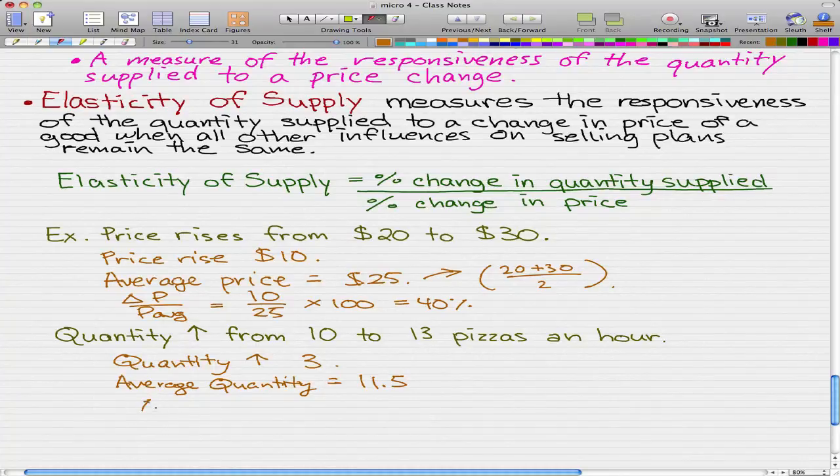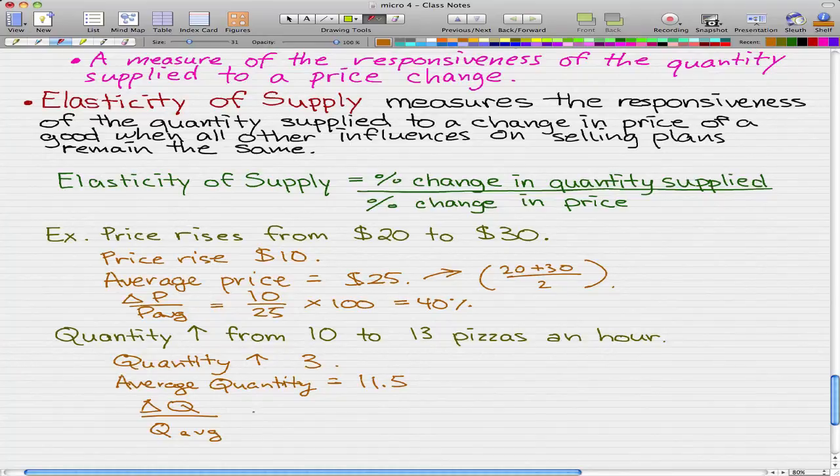So that's delta Q for the change in quantity over the average quantity, which we dub Q average.